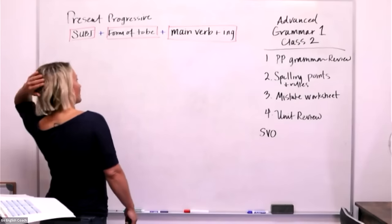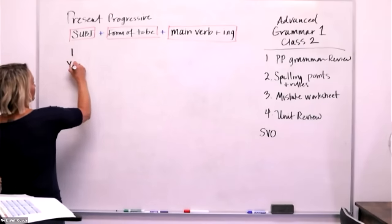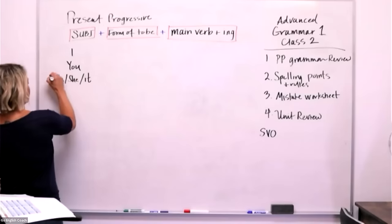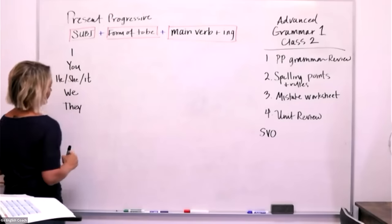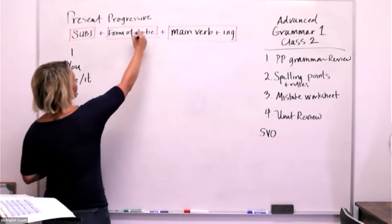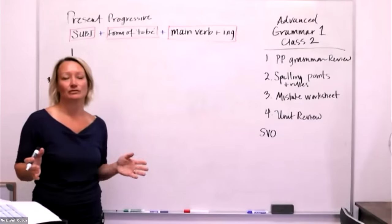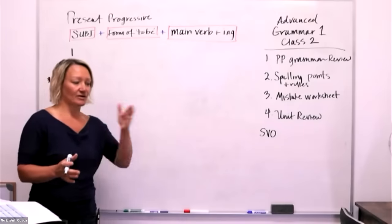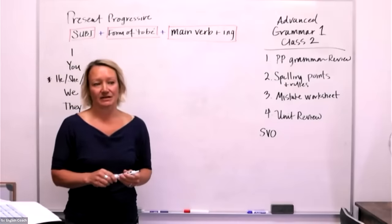Our subjects are: I, you, we — and then he, she, it for third person. We then add the forms of the verb 'to be.' Even at the C1/C2 level, let's do a quick review so we're all on the same page, because one of the most common mistakes I hear is students forgetting this part — saying 'I walking' or 'I needing.'